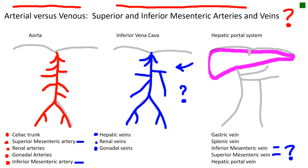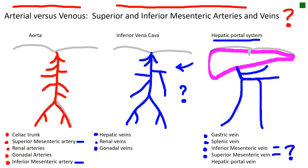Let's figure this answer out together. We're going to answer the question by looking at the hepatic portal system. The gastric vein drains blood from the stomach into the hepatic portal vein, which goes to the liver. The splenic vein drains the spleen area and also dumps into the hepatic portal vein, which goes to the liver. The inferior mesenteric vein drains nutrient-rich food particles from the intestines back toward the liver through the hepatic portal vein.